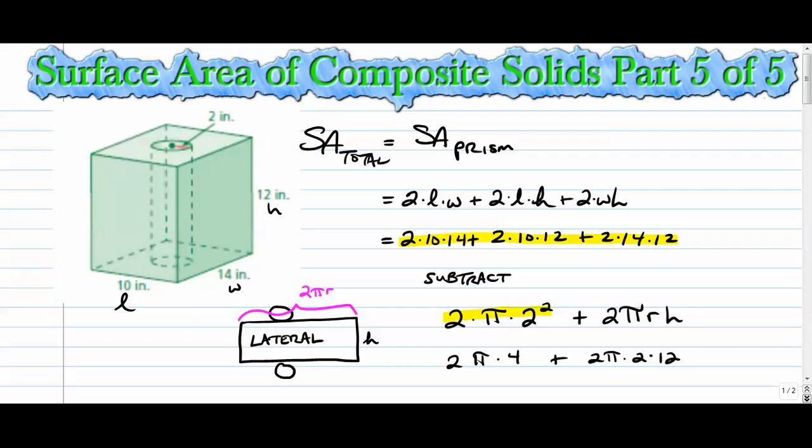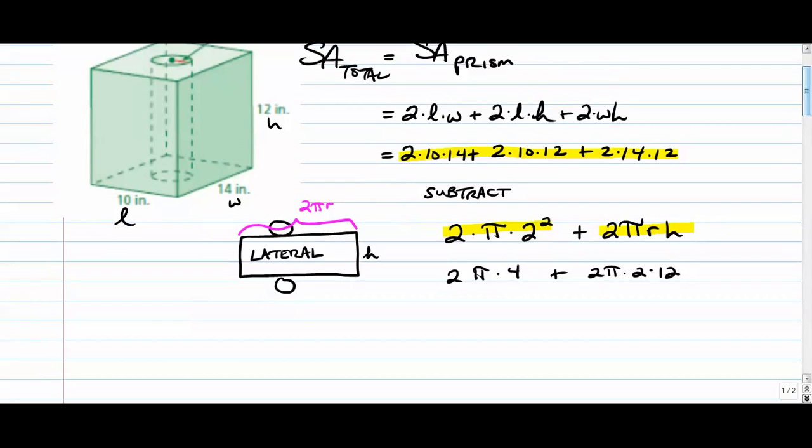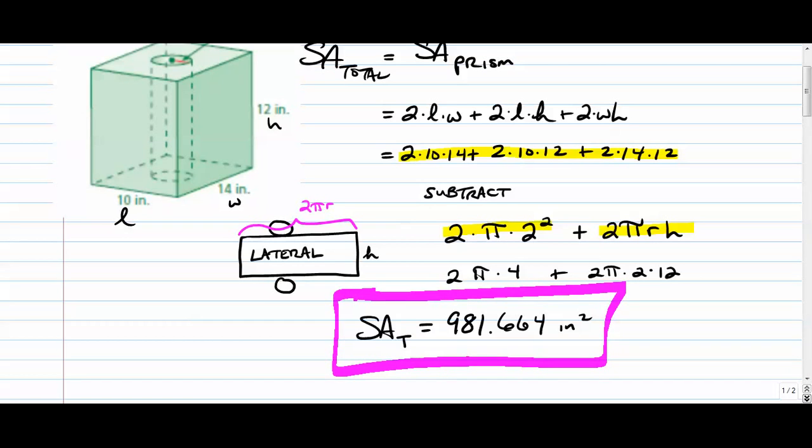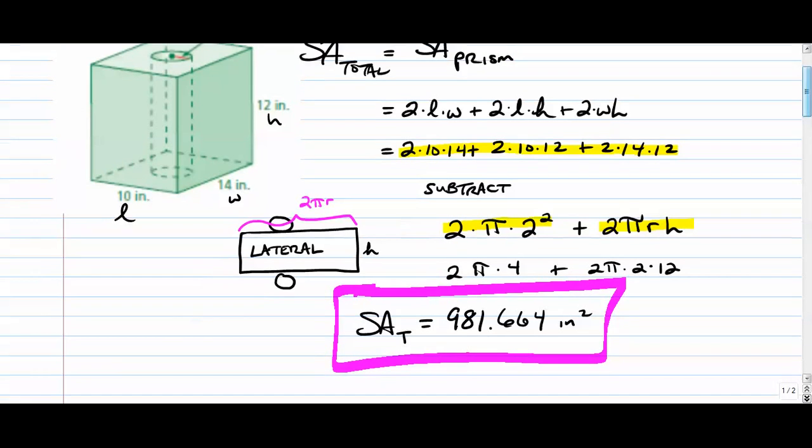So what we're doing is we're taking this, subtracting this, adding this, and we are good to go. If you type all that into your calculator, the surface area total is 981.664 square inches.